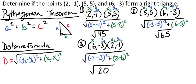Now we're going to plug √45, √65, and √20 into the Pythagorean theorem to see if they form a right triangle. But we need to know which one is our hypotenuse. To do that, we check the values inside the radicals and see which is biggest: 20, 45, or 65. Yes — 65 is the biggest, so √65 will go in our hypotenuse spot.